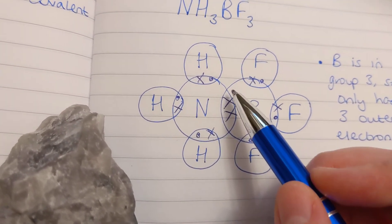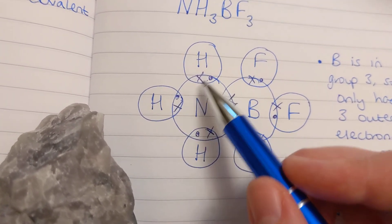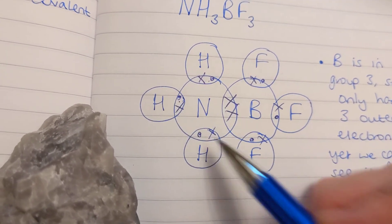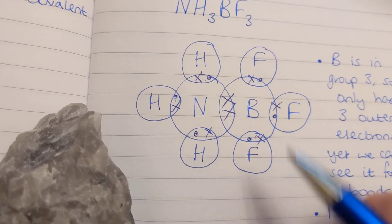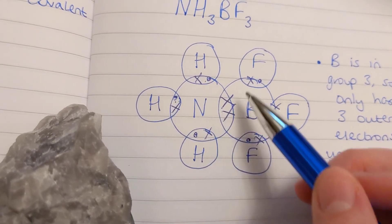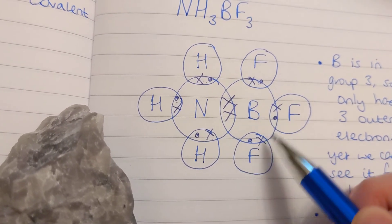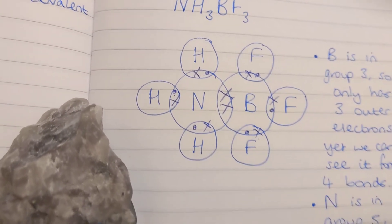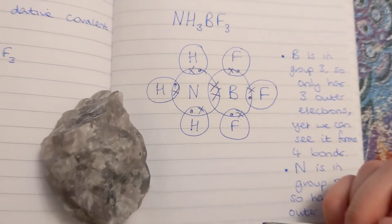Now let's add up the outer shells: for nitrogen — two, four, six, eight — and for boron — two, four, six, eight — and we're finished.